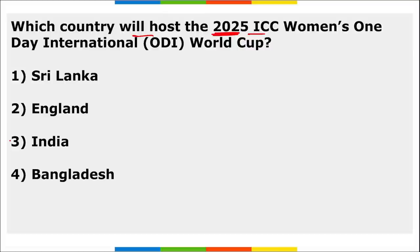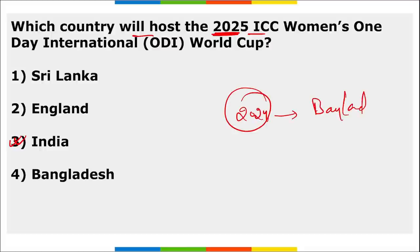Which country will host the 2025 ICC Women's One Day International World Cup? It is India that will host the 2025 ICC Women's ODI World Cup. The 2024 Women's T20 World Cup will be hosted by Bangladesh, and the 2026 Women's ICC T20 World Cup will be hosted by England.